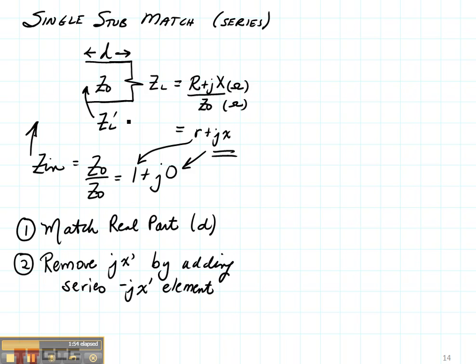So let's suppose that zl prime is 1 plus jx prime, then the next thing that we're going to add is a series stub open-circuited or short-circuited which has an input impedance of minus jx prime.